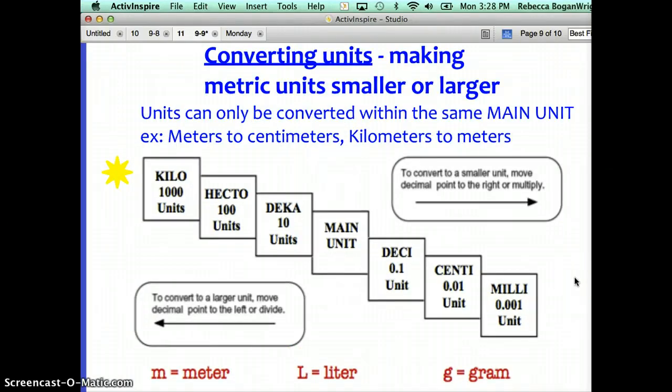If we were going to convert between main units, we would use this ladder method or staircase method. For example, if we're talking about the main unit being meters and we wanted to go from a kilometer to a hectometer, we would move the decimal point one place to the right. Moving the decimal point one place to the right really means we're multiplying by 10. So we could say that there are 10 hectometers in one kilometer.